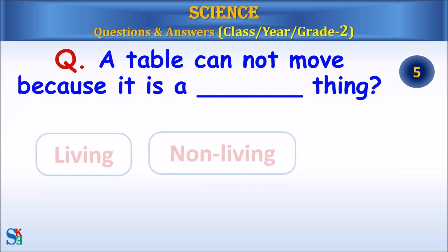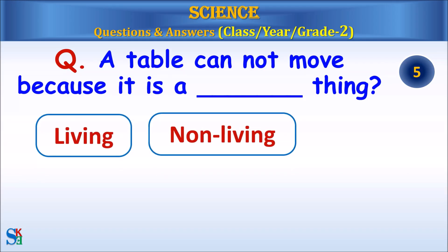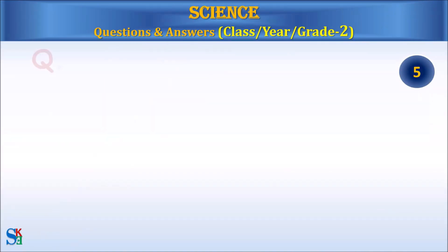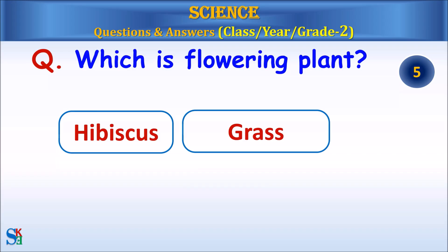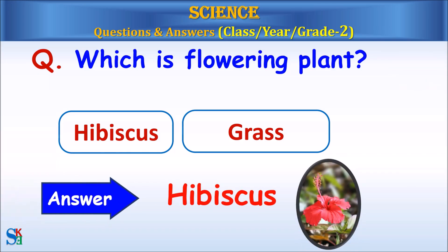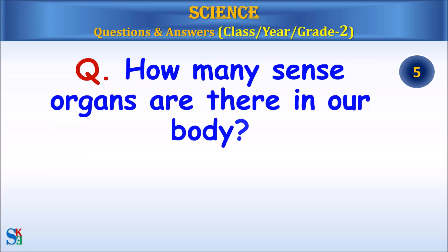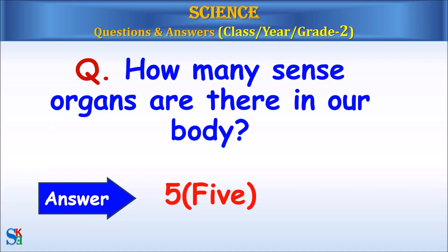A table cannot move because it is a living or non-living thing. Answer, non-living thing. Which is flowering plant, hibiscus or grass? Answer, hibiscus. How many sense organs are there in our body? Answer, five.